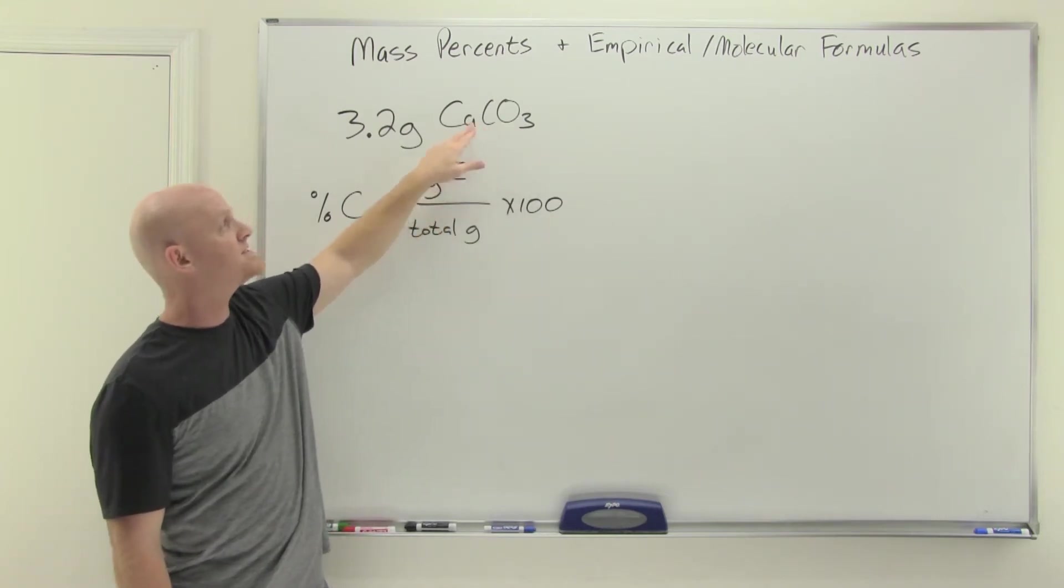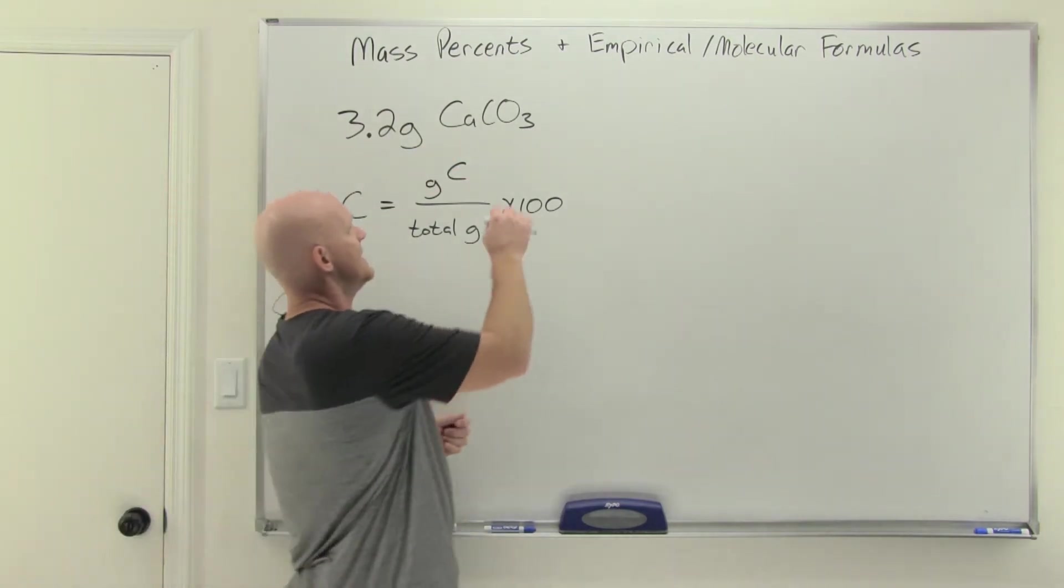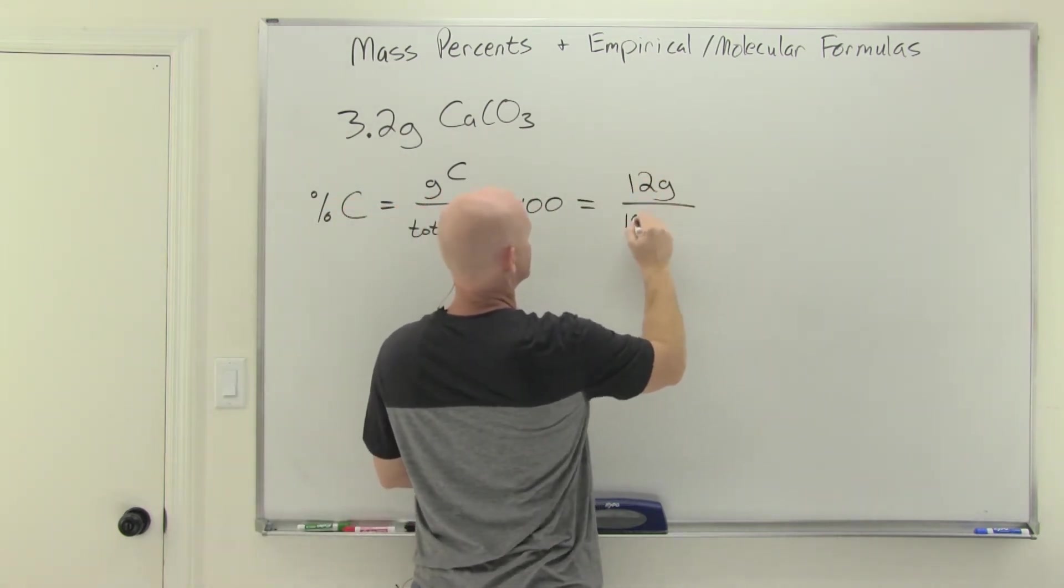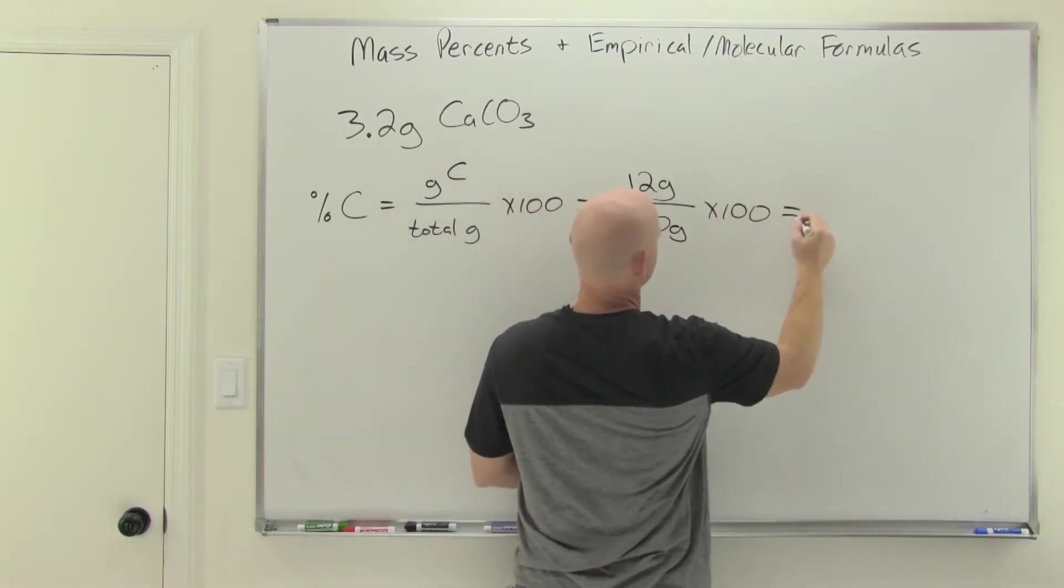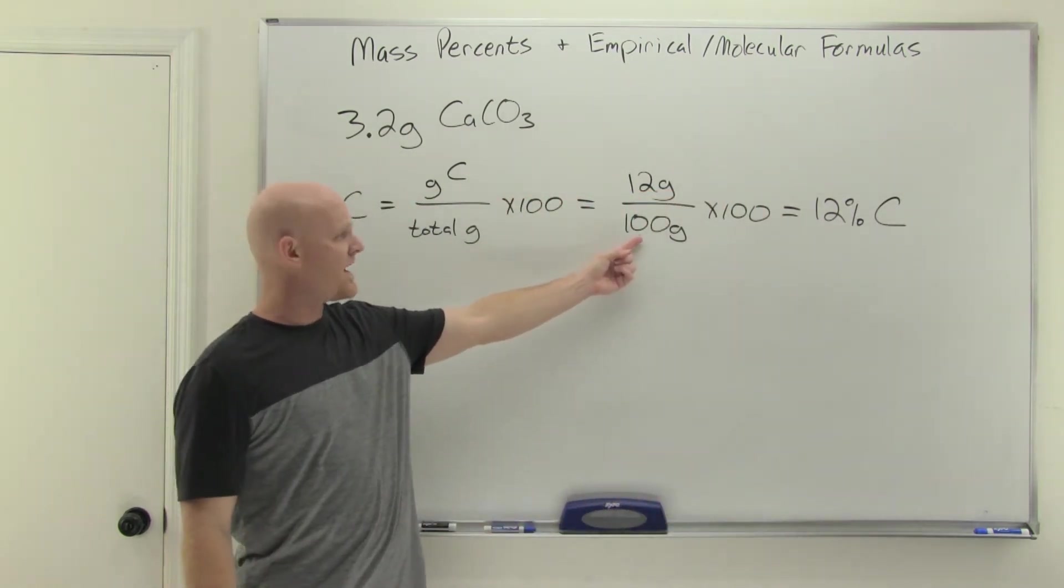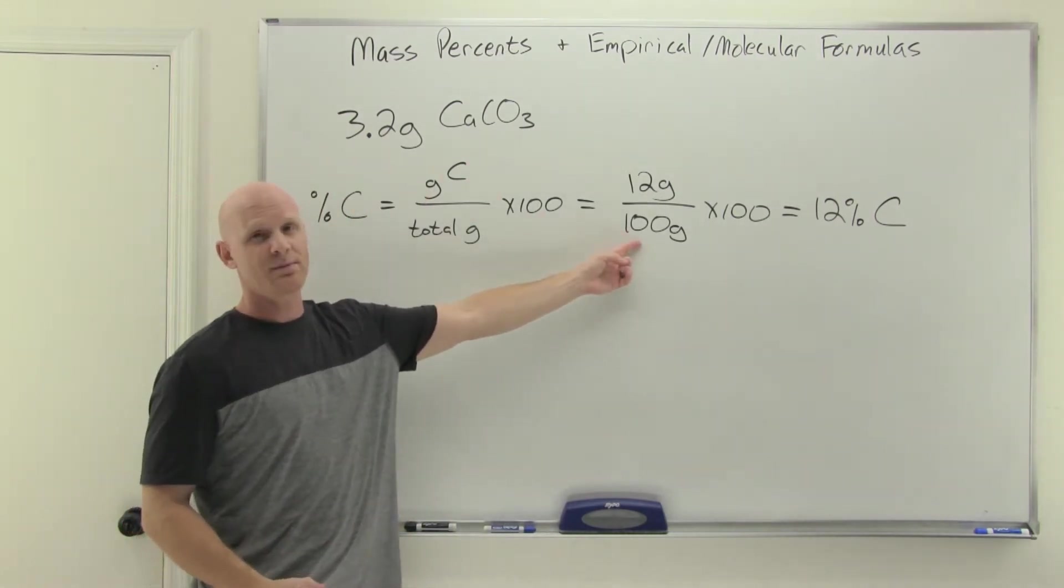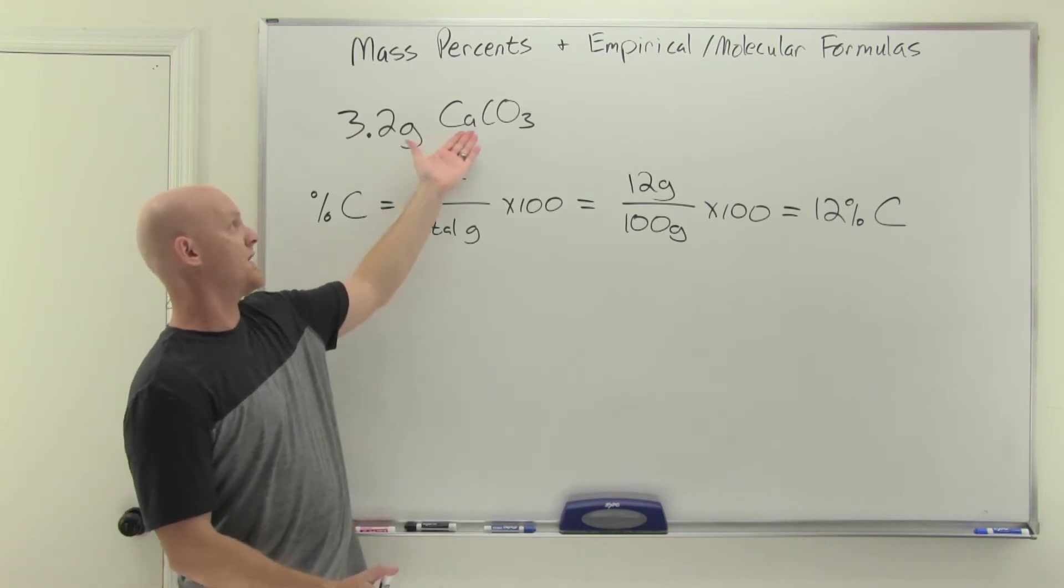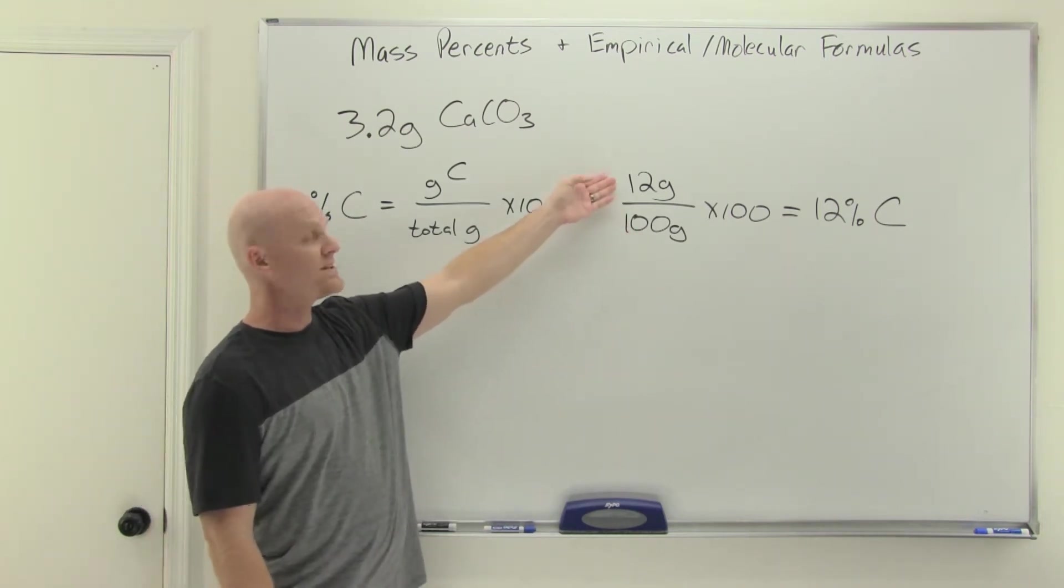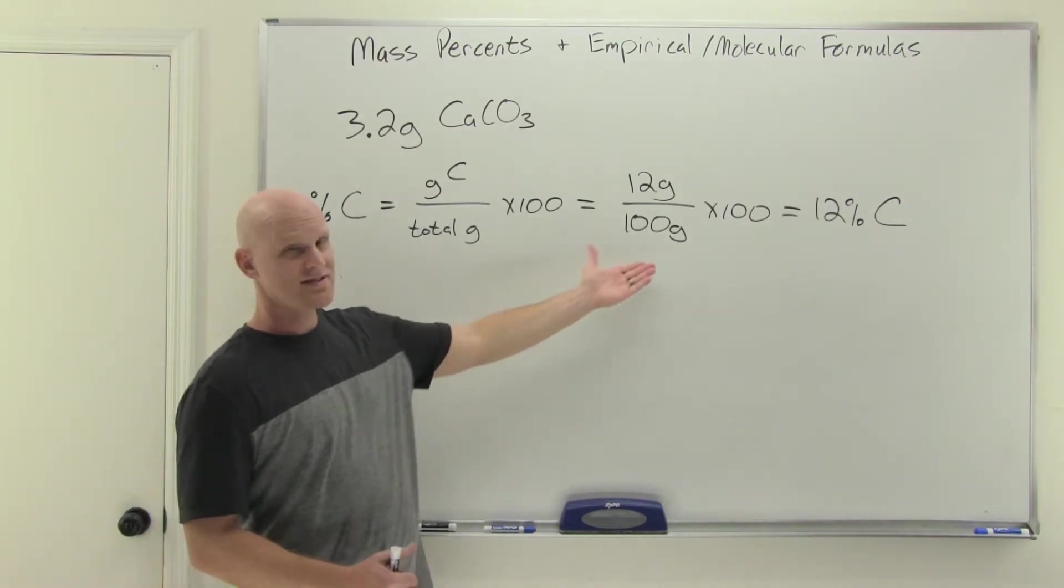We'll look up on the periodic table and find that calcium has a molar mass close to 40 grams, carbon's close to 12 grams, and each of the three oxygens are close to 16 grams. 3 times 16 is 48, plus 12 is 60, plus 40 is 100 grams. That's why I used it - it's going to make the math really easy. There's one carbon in a mole and one carbon weighs 12 grams out of a total of 100 grams times 100. We can see that that is exactly 12 percent carbon.